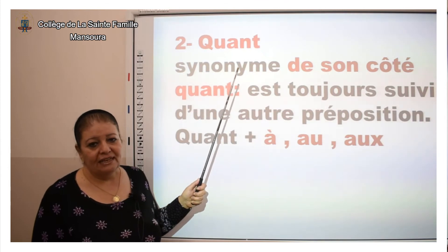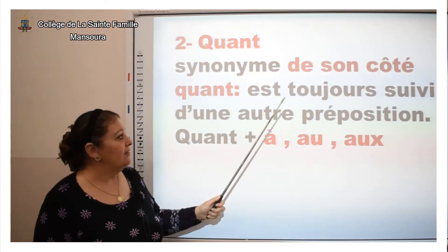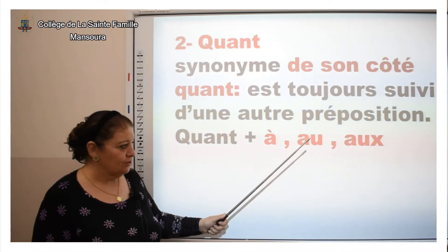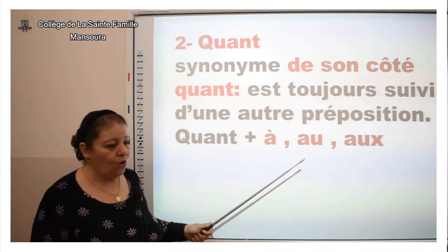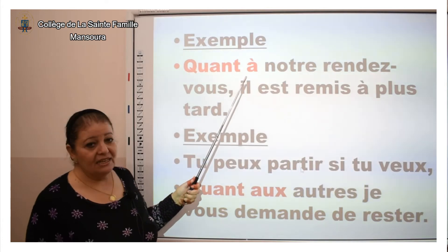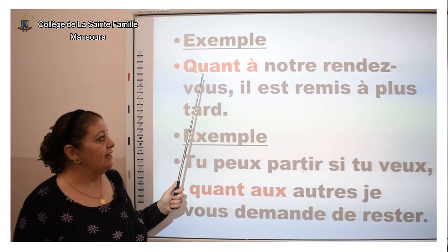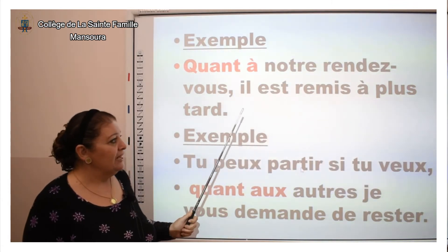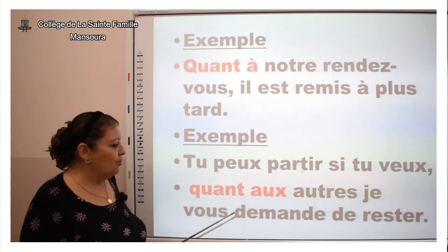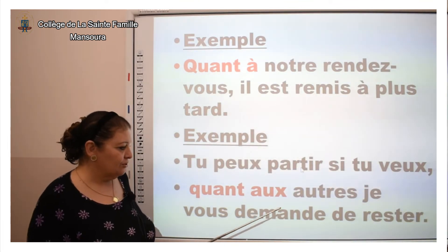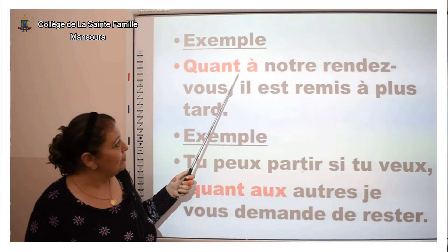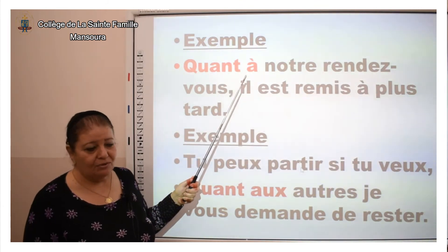Deuxième « quand » : c'est « quant » avec T. C'est synonyme de « son côté ». « Quant » avec T est toujours suivi d'une autre préposition, comme « à », « au » ou « aux ». Exemple : « Quant à notre rendez-vous, il est remis à plus tard. » Deuxième exemple : « Tu peux partir si tu veux. Quant aux autres, je vous demande de rester. » On a mis « quant » avec T parce qu'il y a la préposition « à » ou « aux ».